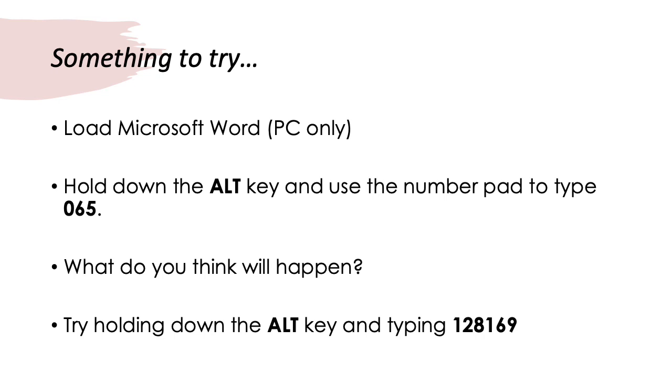Have a look to see what happens. So, hold down the ALT key and type 065. What's actually happening is you're telling Microsoft Word to give you the character that has the ASCII code 065. You can do the same by holding down the ALT key and typing the code 128169. This will tell Word to give you the Unicode character that has that number. Give it a go and find out what character has that code.